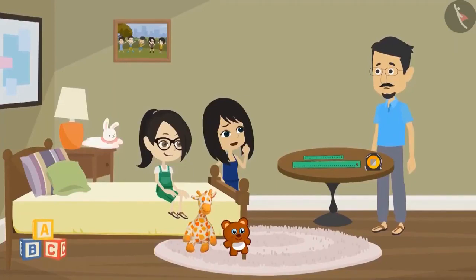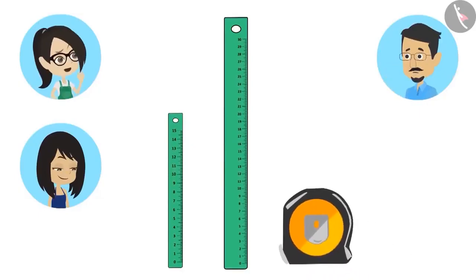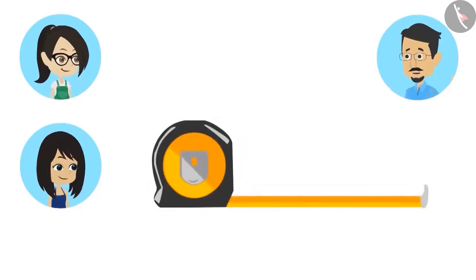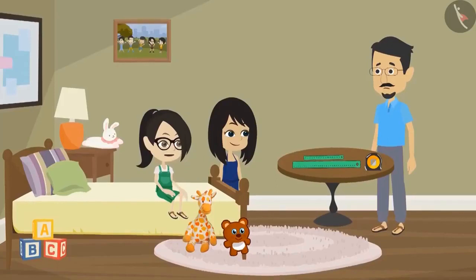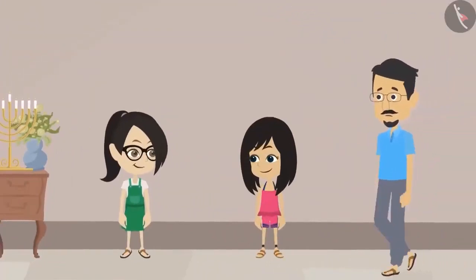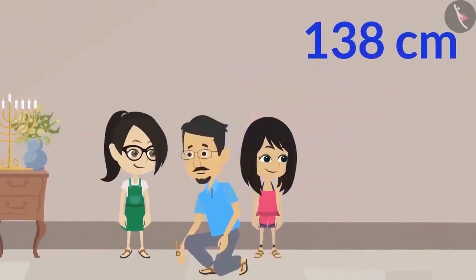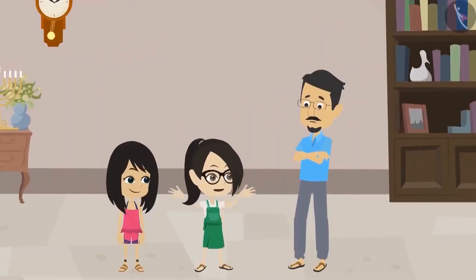Vandana asks how to measure something longer than 30 centimeters. Papa shows a third scale — a retractable tape measure. To use it, the handle is pulled out to extend the scale. With it, Papa measures the girls' heights: Neha is 138 centimeters tall and Vandana is 140 centimeters tall. Vandana is excited that this scale can measure long objects.